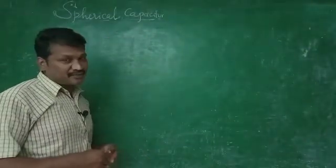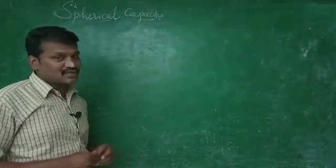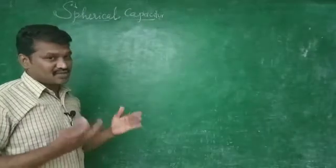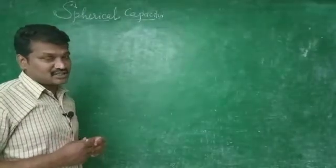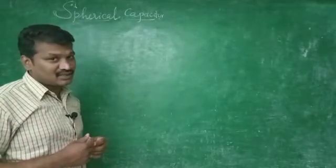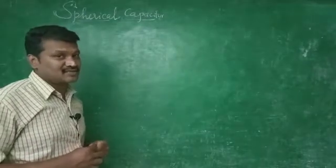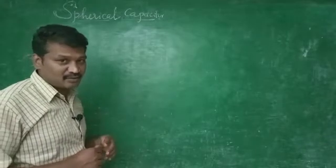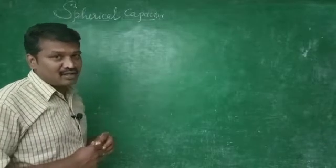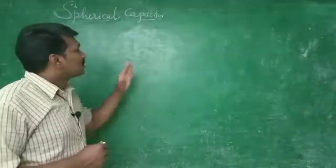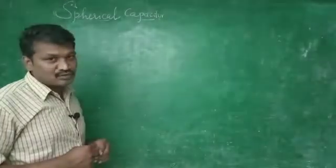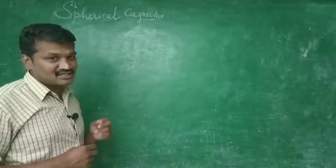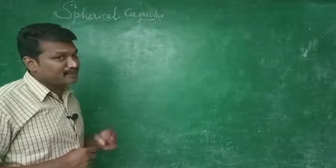Spherical Capacitor. There are two cases. One case is the outer sphere grounded, and another case is the inner sphere grounded. In the first case, there are two hollow spheres which have radii A and B.